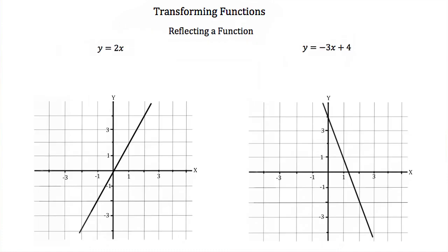The next type of transformation is reflecting a function. When we reflect a function, we take the slope — which in this equation is 2 — and multiply it by negative 1. So reflecting y is equal to 2x gives us y is equal to negative 2x. Our y-intercept is 0, so we're back at the origin. We go down 2 and over 1 to get our next point, connect the dots, and our function looks like that.